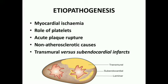Third is acute plaque rupture. In slowly developing coronary ischemia due to stenosing coronary atherosclerosis of high grade, it may not cause acute myocardial infarction but continues to produce episodes of angina pectoris. However, acute plaque rupture plays a role in the development of the etiopathogenesis of myocardial infarctions.